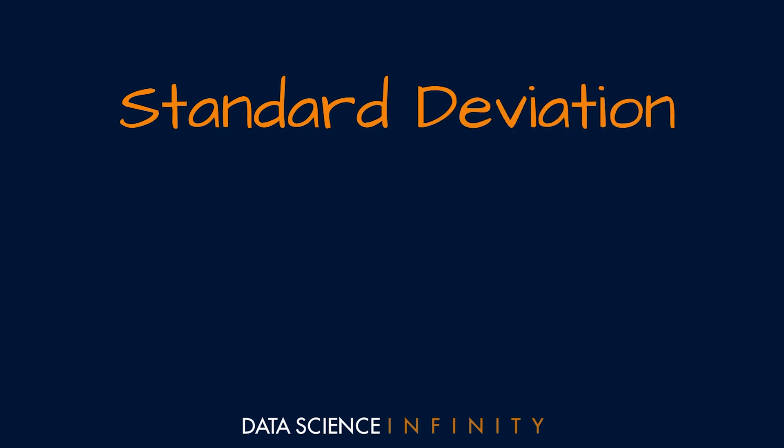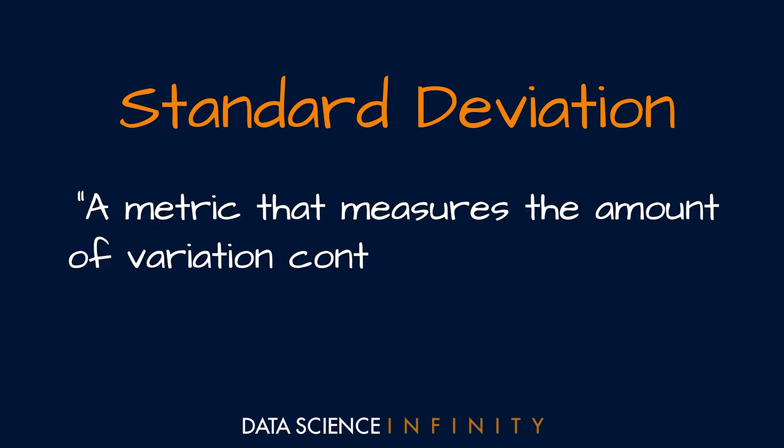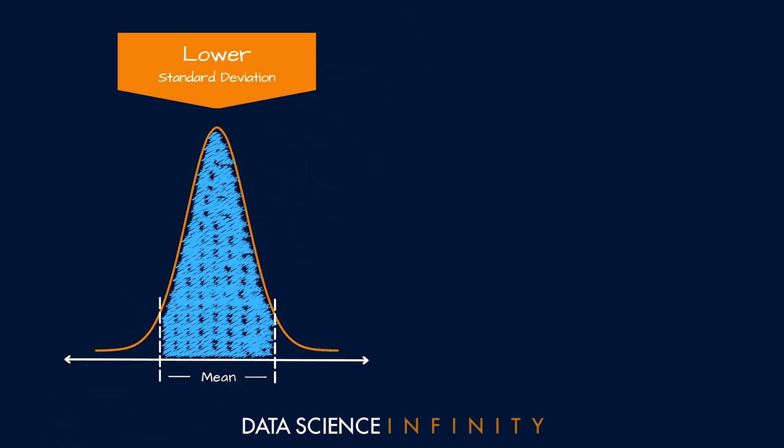The other thing that makes up a normal distribution is something called standard deviation. We will talk about this more in a moment, but as a nice high-level overview, standard deviation is simply a metric that measures the amount of variation contained within a set of data. And when talking about the standard deviation for a distribution, a lower standard deviation tells us that the values in the set tend to be pretty close to the mean. And this is what we saw earlier with a taller, skinnier curve.